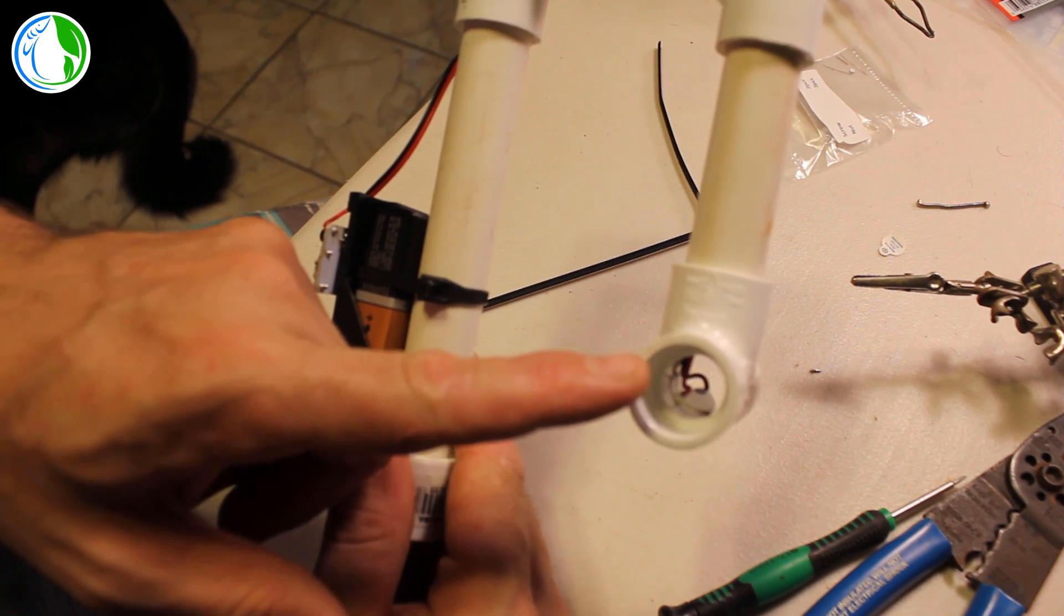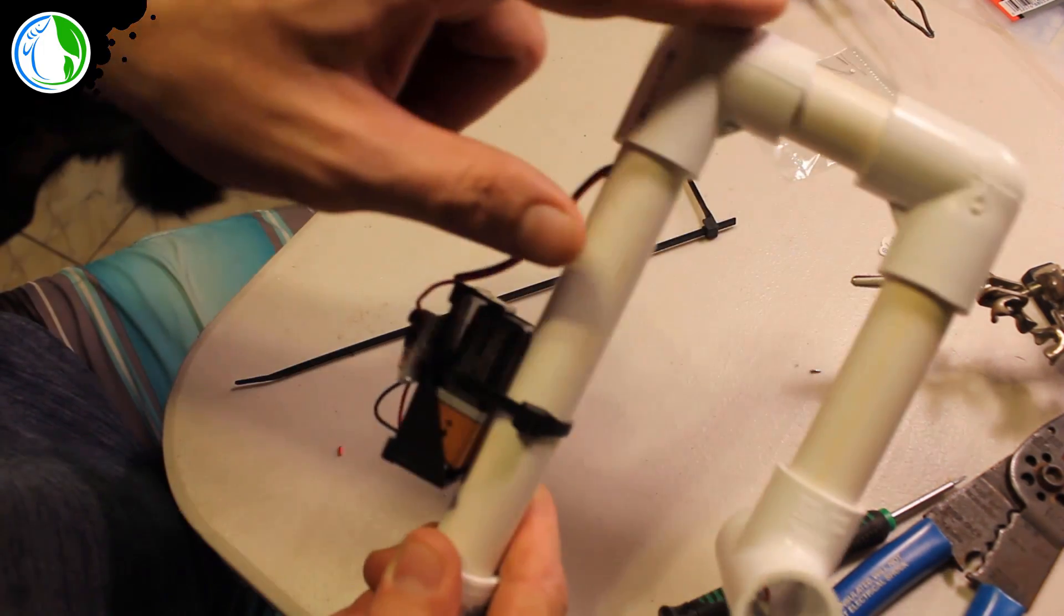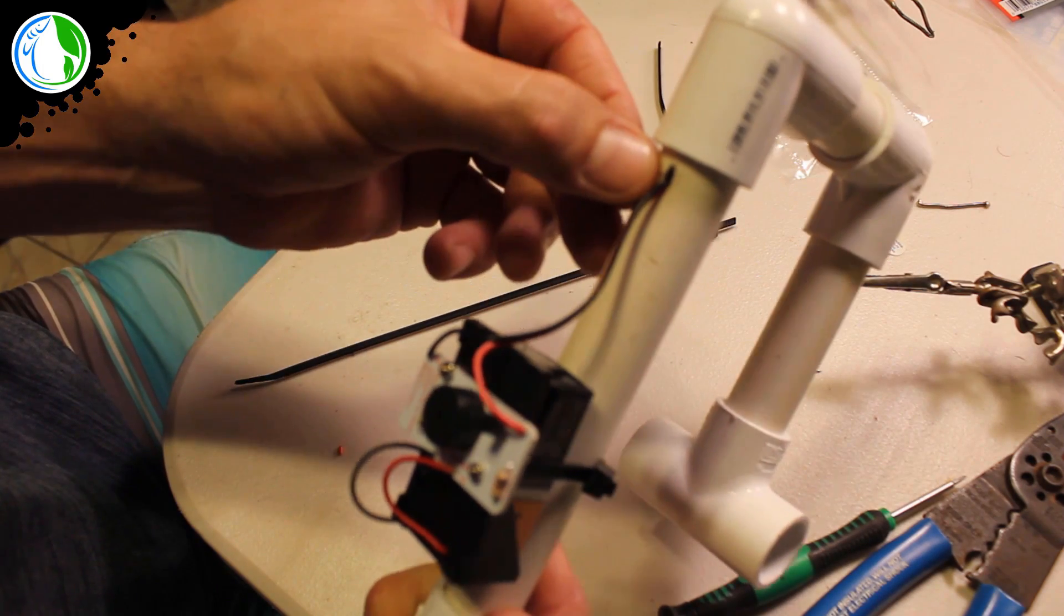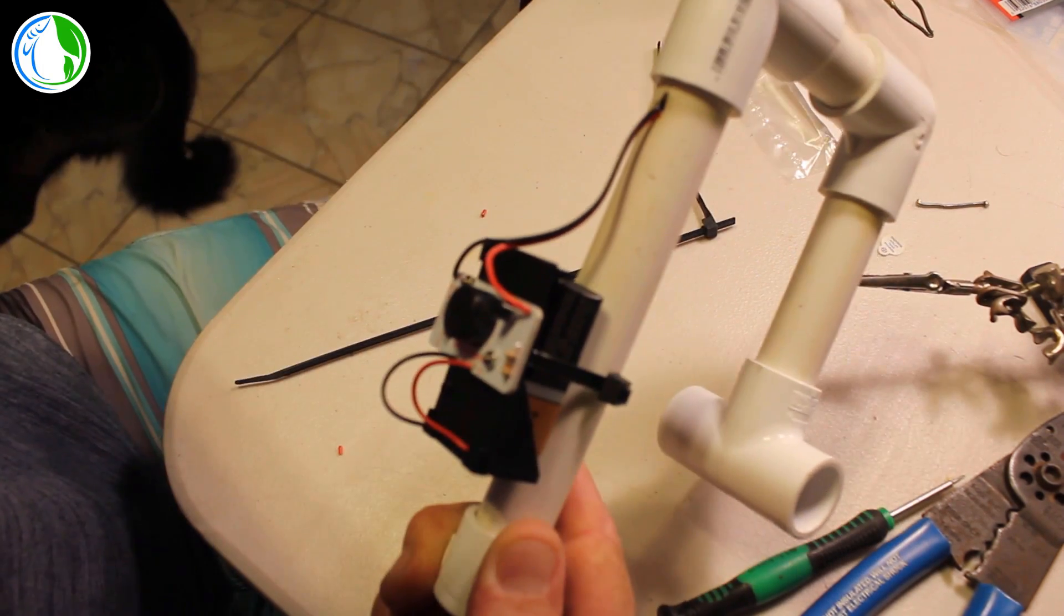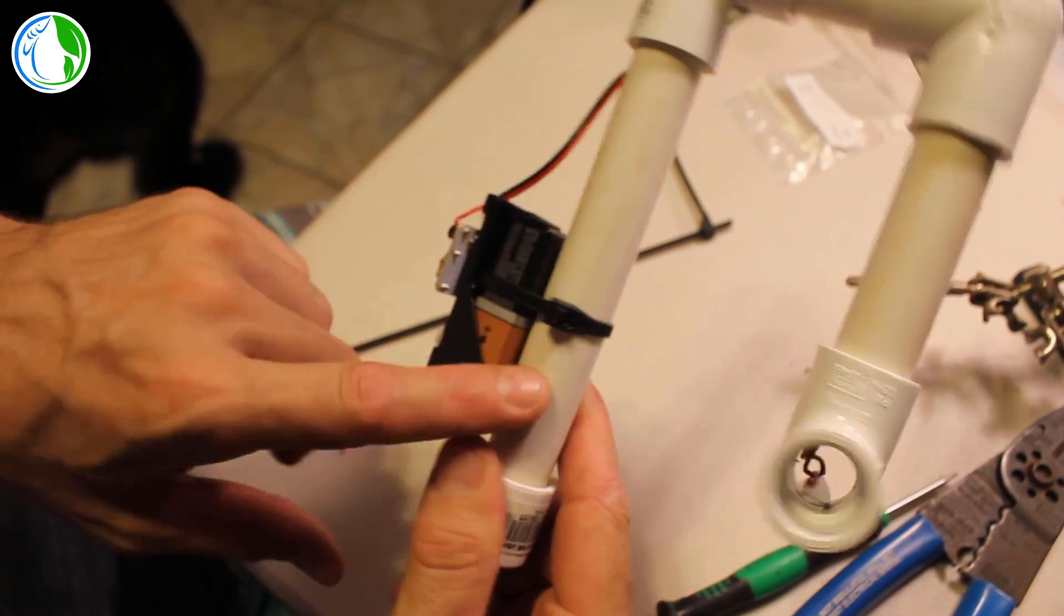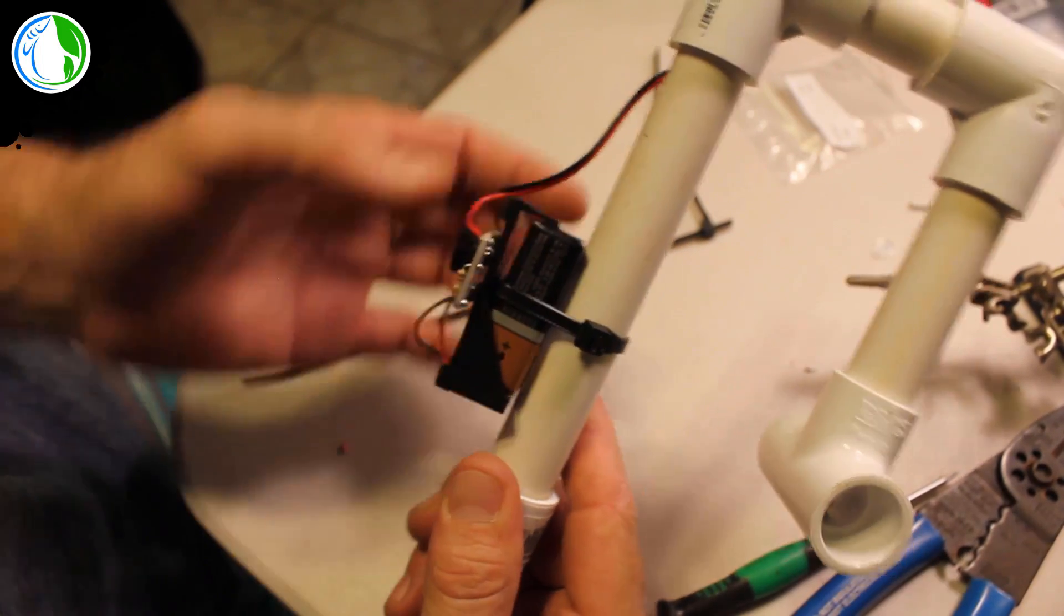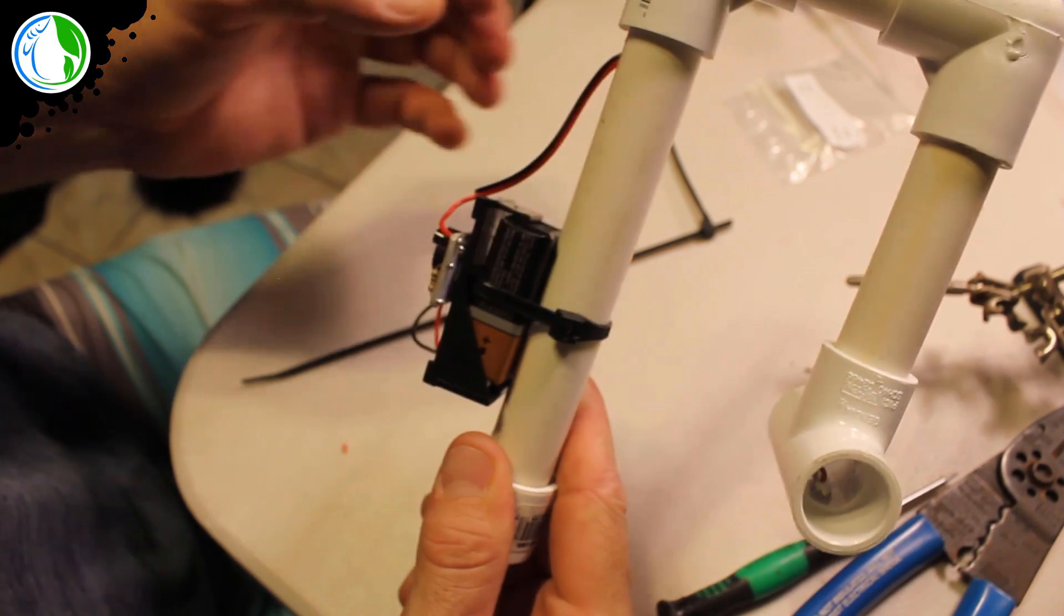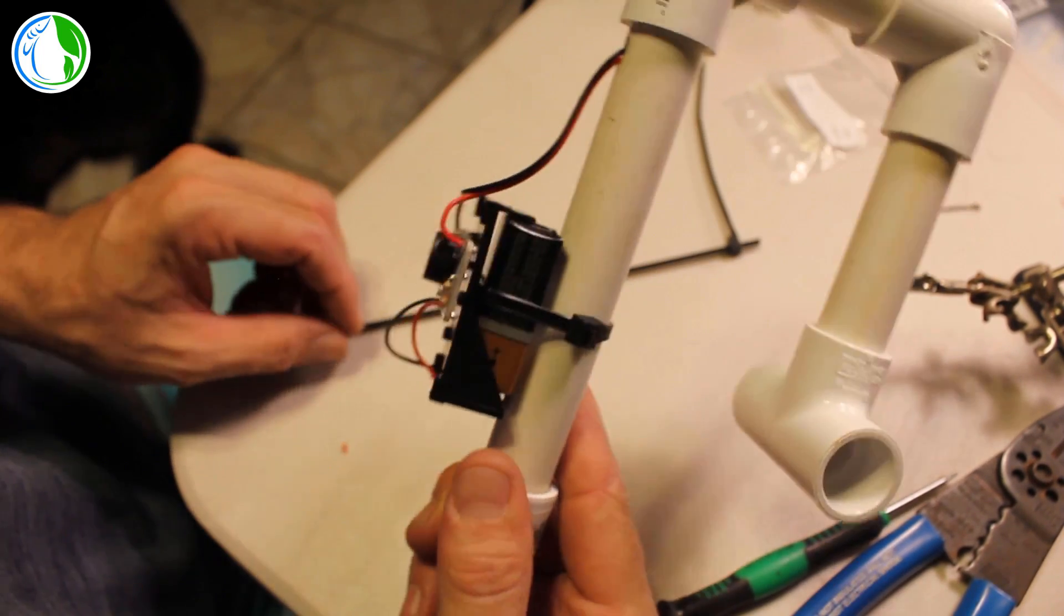A little sensor inside of there. Comes up through, out through the hole I made there. And you've got the battery strapped to the PVC pipe and the circuit board and everything clipped onto that. So, let's go try it out.